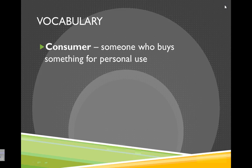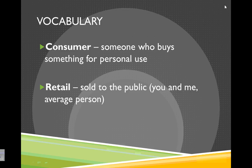Some of the vocabulary around that: there's the consumer, which is someone who buys something for personal use — kind of the customer. And there's retail, which means it's sold to the public — you, me, the average person. We'll look at some different ways that things are sold later, but right now we're starting at retail, so that's just something sold in a store to the general public.